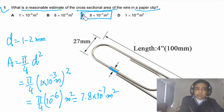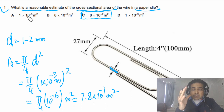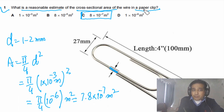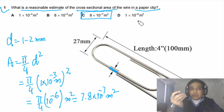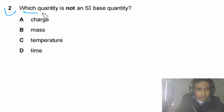Looking at the given options, our answer has order of magnitude 10⁻⁷, so the answer is C. Option A has 10⁻⁵ — a very big difference. Option B has 10⁻³ — also a very big difference. Option D has 10⁻⁹. If you have a good sense of scale, you will get this right. Try to develop your sense of scale.